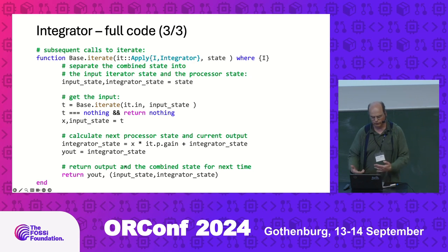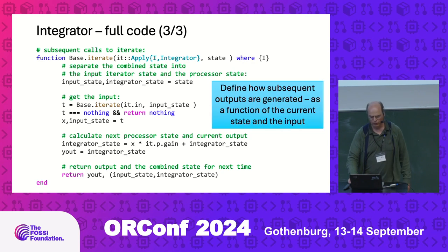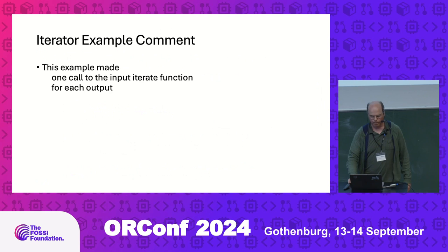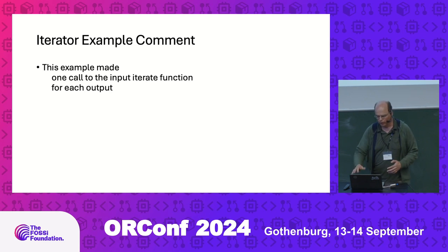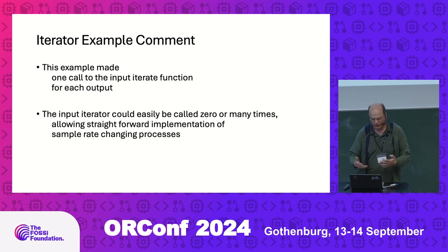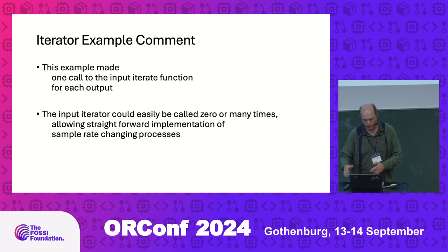The iterate function calls the input iterator to get the next input, does the actual computation — in this case multiplying the input by the gain and adding it to the integrator state — produces the output, and returns it in the standard Julia form of output plus next state. This example has one call to the input iterate function for every output, but you can easily call the input iterator zero times or many times, and that's basically how you implement rate-changing processes.